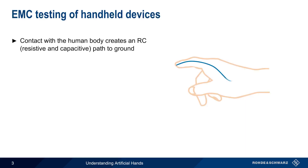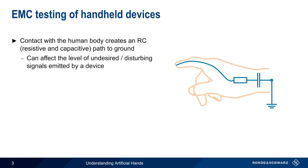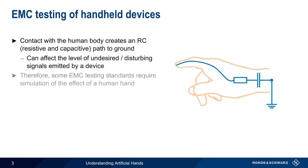Any contact between a device and the human body creates a combination of a resistive and capacitive path to ground. This path can affect the level of any undesired or disturbing signals that are emitted by the device. Therefore, some EMC testing standards require that the effect of the human hand be simulated during testing.